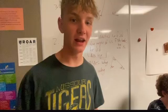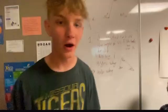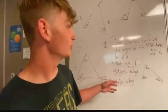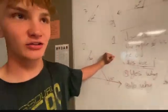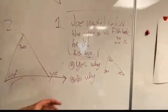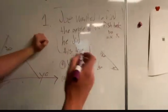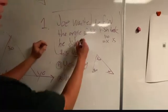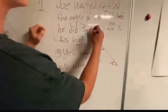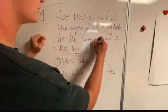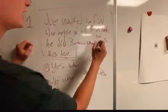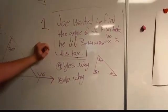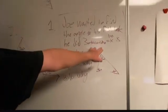All right, today we're going to be doing lesson 3.2, and it is based on angles — the internal and external angles. Here we have question one: Joe wanted to find the angle of his fish tank. He did 30 plus 40 minus 180. Is this true? The question is, is this formula true, and will it be accurate to equal x?